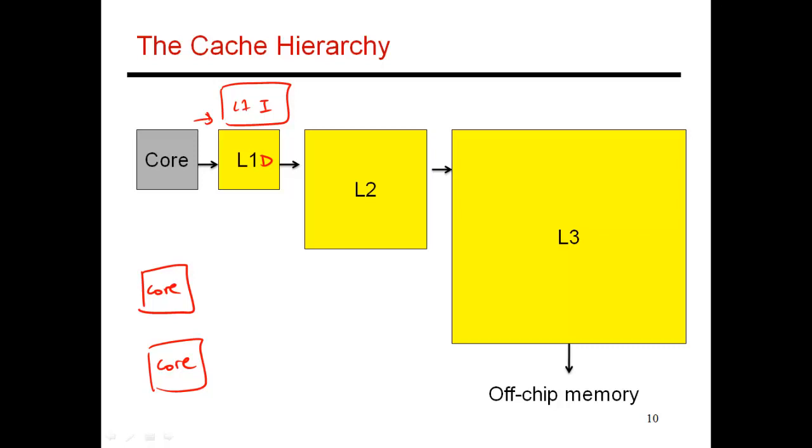Now these L1 caches are usually private to every single core. So every core is going to have its own L1 data and its own L1 instruction cache and so on.